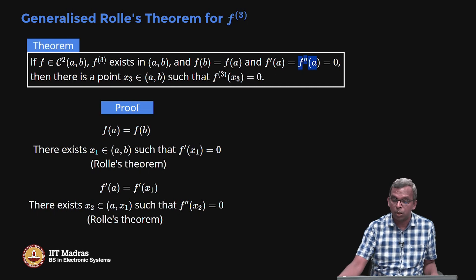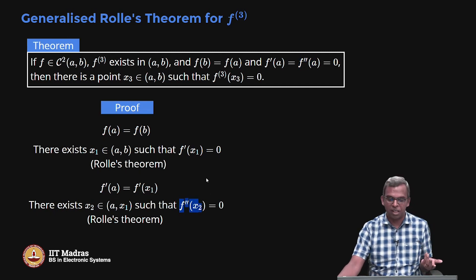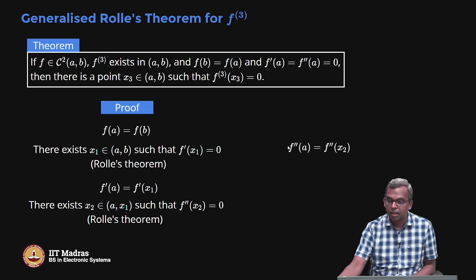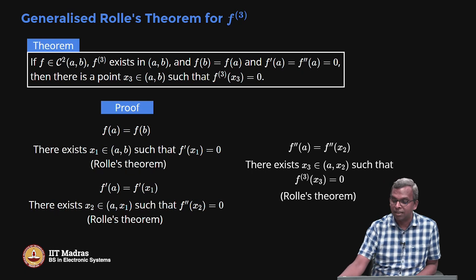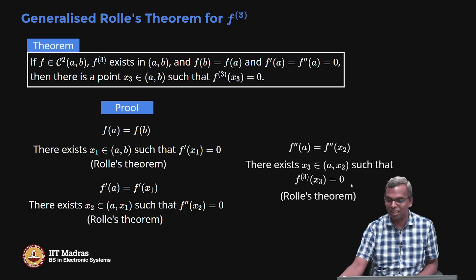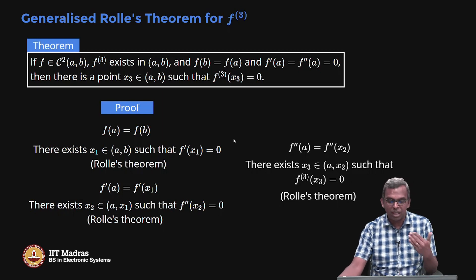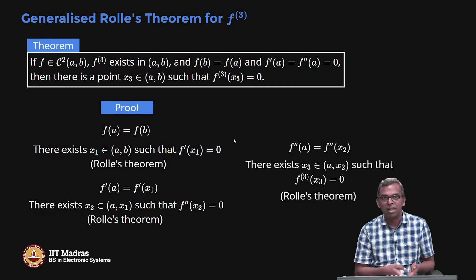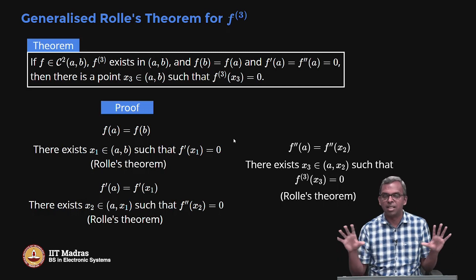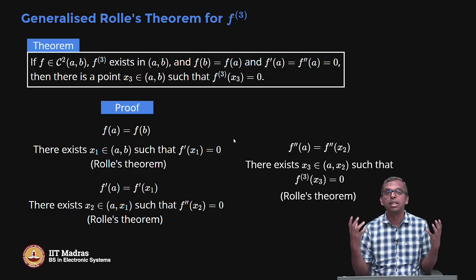Now I know F double prime of A is 0 and F double prime of X2 is also 0. So I can use Rolle's theorem again: F double prime of A equals F double prime of X2, and therefore there exists an X3 in (A, X2) such that F3 of X3 equals 0. I just repeatedly use Rolle's theorem on F, then on F prime, then on F double prime, getting better and better results. This is the basic idea behind generalizing Rolle's theorem for higher order derivatives.